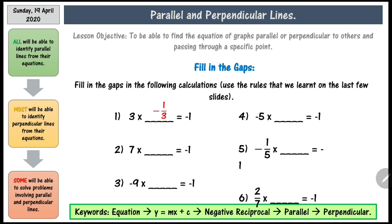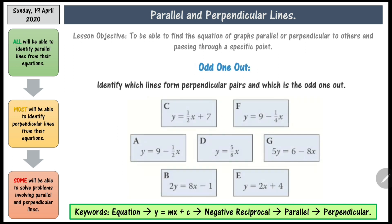The answers to the following questions are: negative 1 over 7, positive 1 ninth, 1 fifth, 5, and negative 7 over 2. If you look at question number 5, there's a minus there and the 1 has dropped below the 5, so the answer should still be minus 1 fifth.